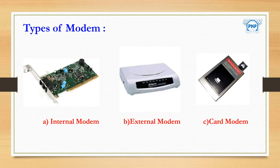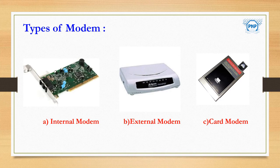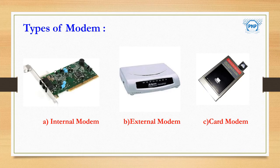The second type is the external modem, which is a peripheral device connected to the CPU cabinet using a cable. It is kept outside — the internet cable attaches to the external modem, and another cable connects it to the CPU. The third type is the card modem, used for laptop computers — similar to a dongle that you attach to a laptop to receive internet signals.